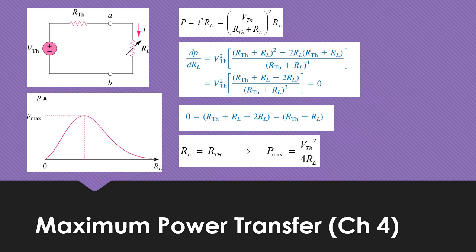In a practical situation or practical application, we usually want to transfer maximum power to the load. This can be represented like a circuit of Thevenin voltage in series with Thevenin resistance attached with a load. In a practical situation like in a communication system, sometimes we want to maximize the power transfer to this load, and with some known internal loss of this Thevenin voltage and resistance, we can find the maximum power transfer to this load.